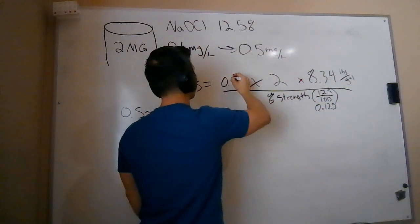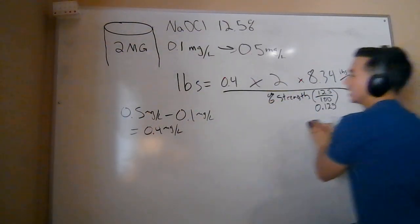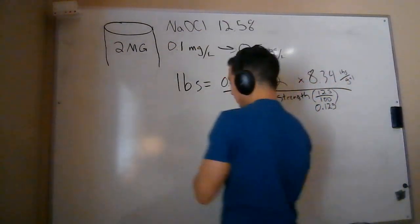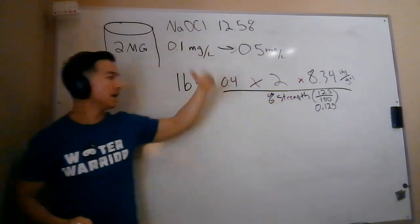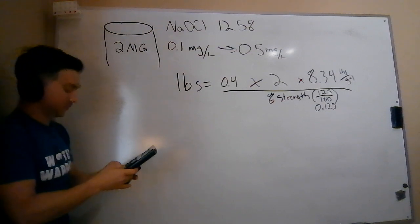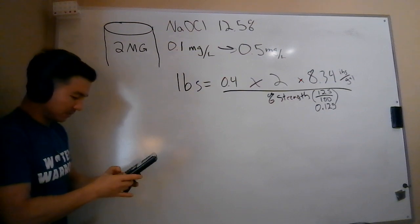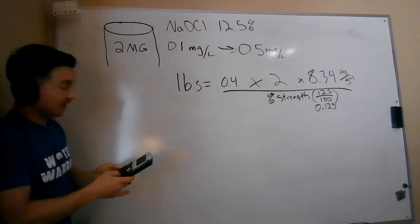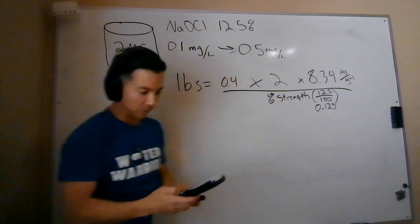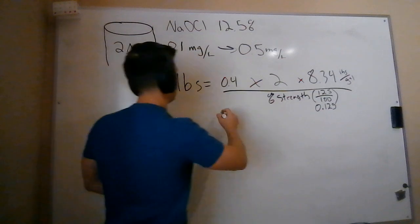So now we've got our 0.4 milligrams per liter, our volume, weight of water, and our percent strength. Now all we're going to do is plug and chug. I like to run all the numbers across the top and then divide by the bottom. So on my calculator: 0.4 times 2 million times 8.34, then divide that by 0.125 — make sure you're dividing by the decimal form. I get 53.38 pounds.